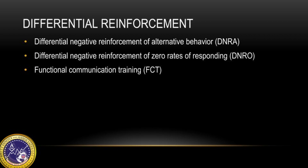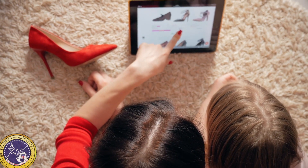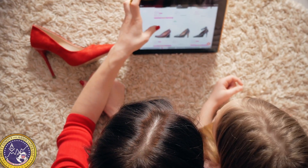Functional communication training is another intervention, where you shape a communicative response to request the reinforcer — in this situation, a break. It's really important that when you shape that functional communication response, it does not require the client to exert more effort than the problem behavior. For example, if a learner uses one or two word utterances and you try to shape an FCR of 'I would like a break please,' that increases the effort and likely will not be successful. Using a picture icon to exchange might be less effort than that vocal response.